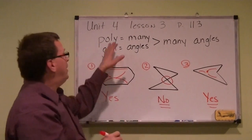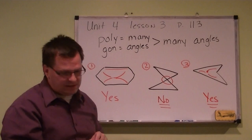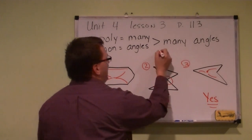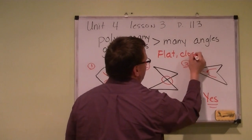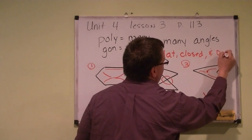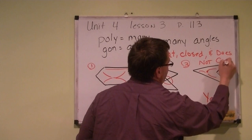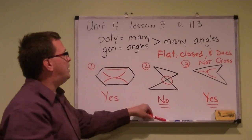So if we can remember, poly means many angles, and they cannot cross. A polygon is flat and closed. So flat, closed, and does not cross. Those are some of the important key things you have to remember when you're thinking about a polygon.